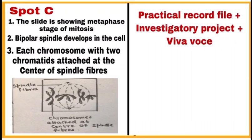Then on the last page, divide this page also in two parts. Write spot C on one side with identification and important points along with a labeled diagram. Spot C is of the metaphase stage of mitosis. Then on the right side, write practical record file, investigatory project and VAWA, where your teacher can give marks for your records.